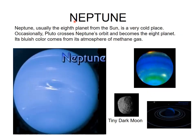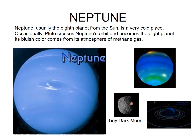Neptune is usually the eighth planet from the Sun and is a very cold place. Occasionally Pluto crosses Neptune's orbit and becomes the eighth planet. Neptune's bluish color comes from its atmosphere of methane gas. You can see Neptune looks very bluish, and it also has a tiny dark moon.